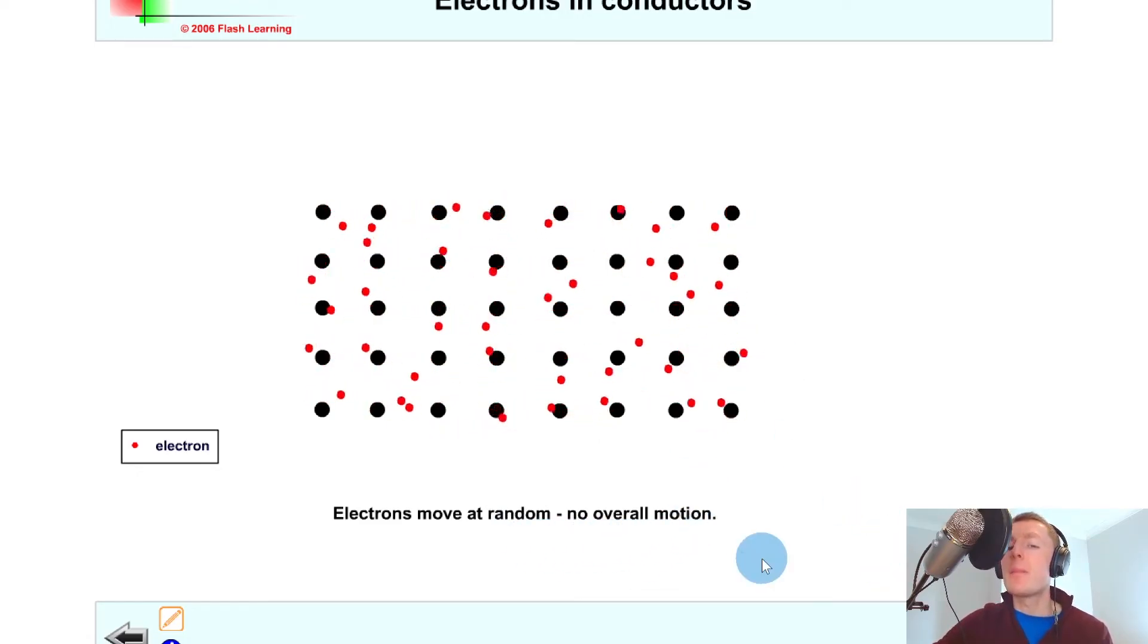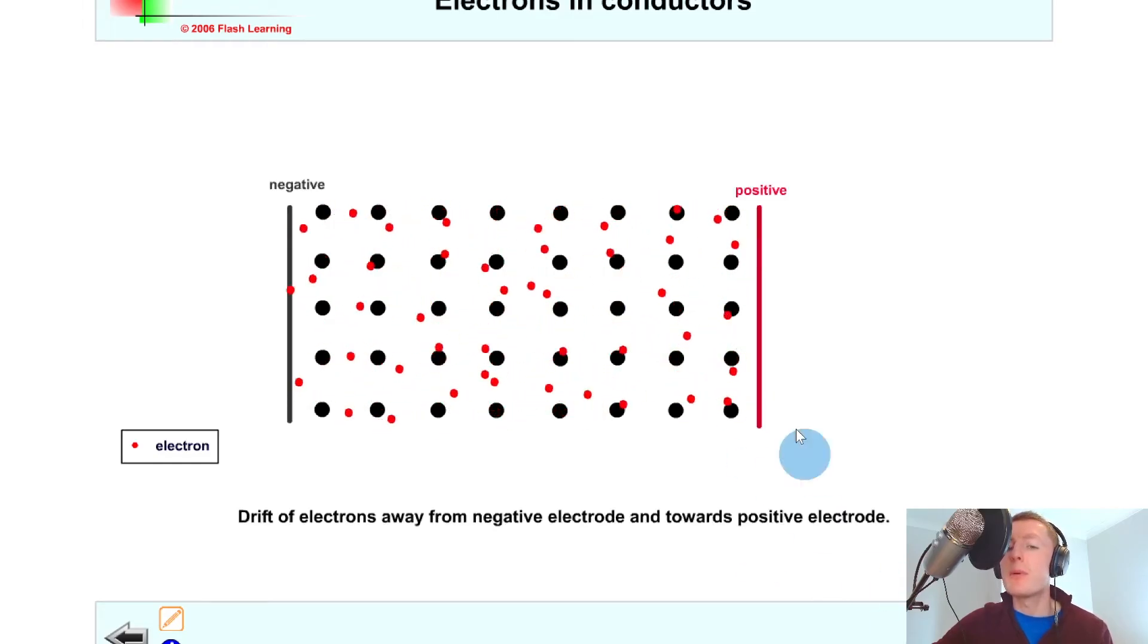However, if we apply a potential difference or voltage to our conductor, then you'll notice what happens to the electrons this time. So let's say we have a positive terminal over here and a negative terminal over here and you'll notice there's now a drift of electrons away from the negative electrode and towards the positive electrode. And that's because, remember, electrons are negatively charged and will be repelled away from the negative plate and will be attracted towards the positively charged plate.